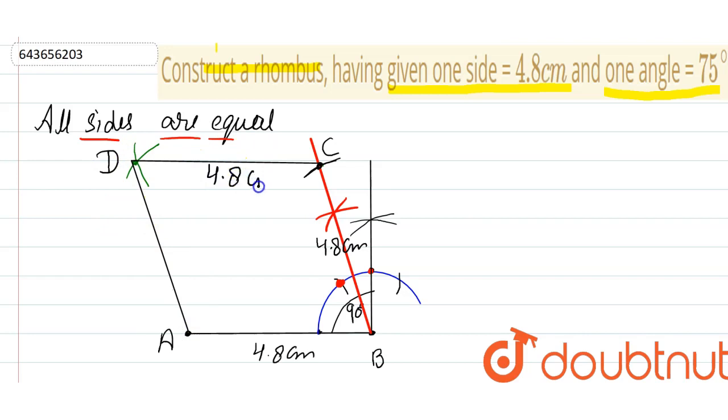And now you can join this D to C and A to D to get the required rhombus. So here by this construction we have made all the sides equal and one angle 75 degree, which was the requirement of the question. Thank you.